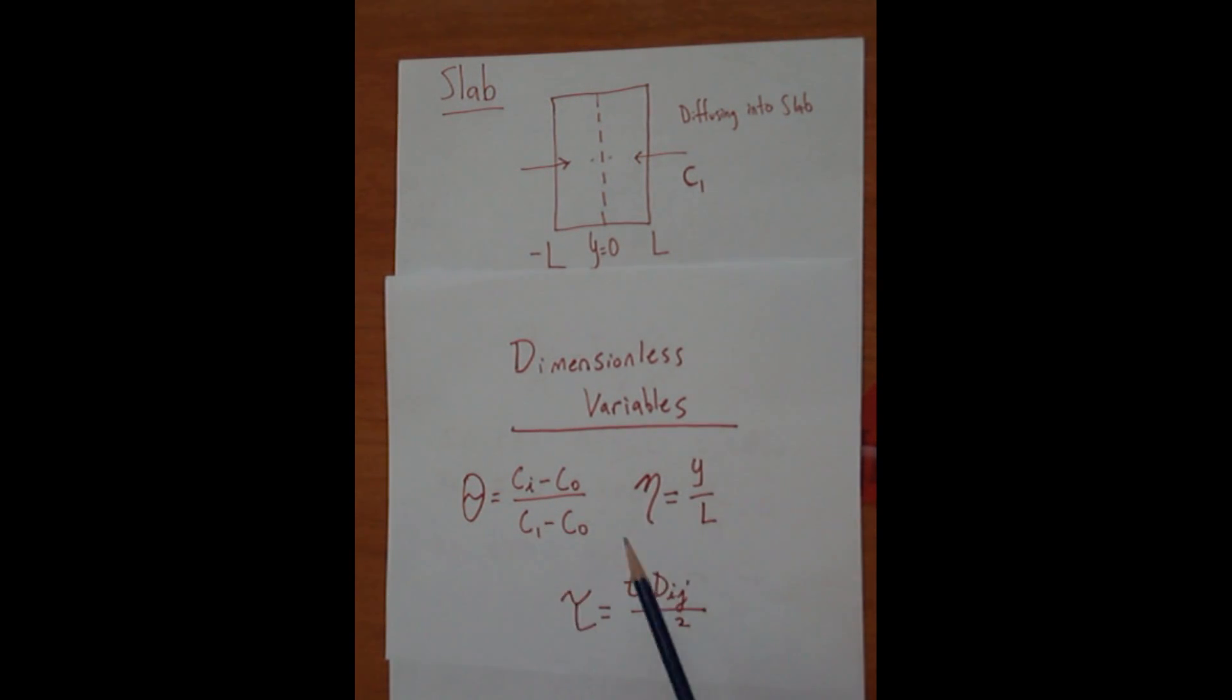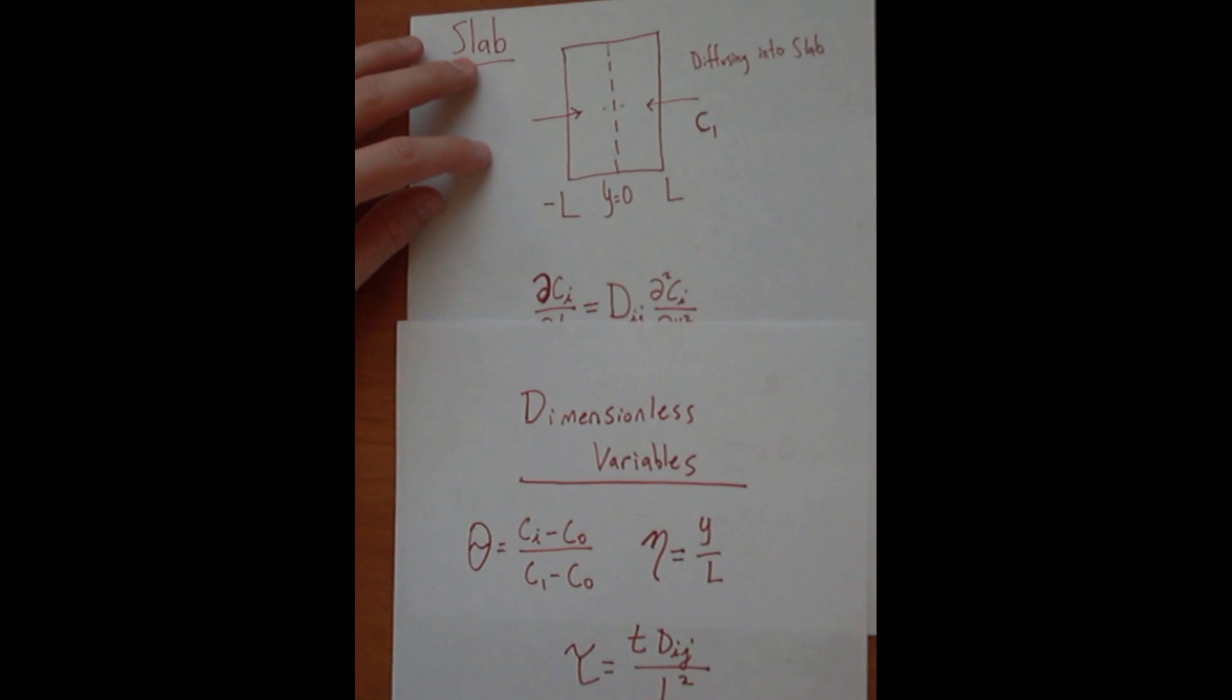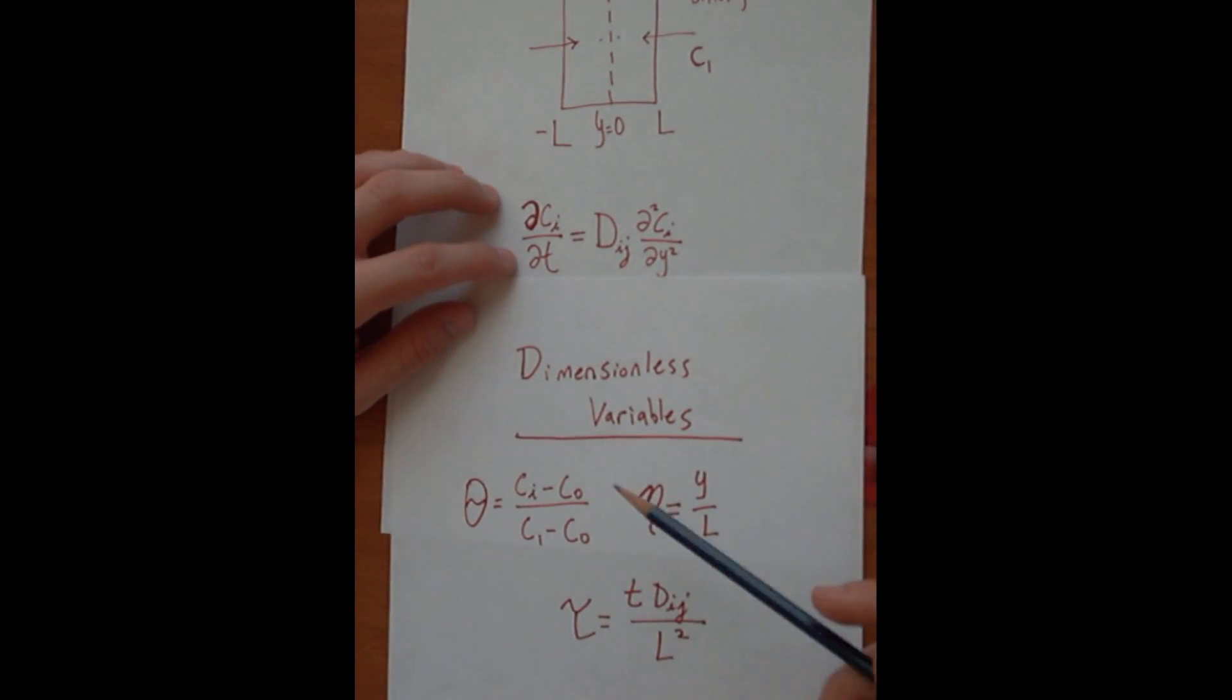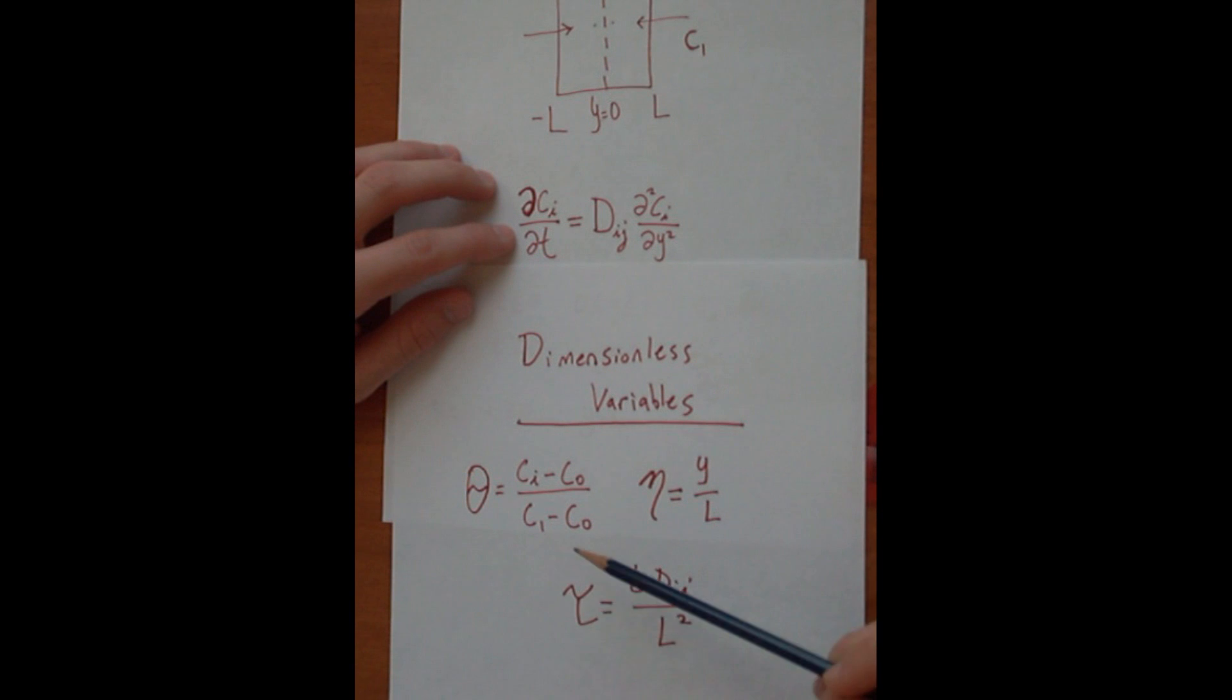So from these variables, we can take this equation, the governing equation, use these variables, rearrange the terms Ci and be able to plug in T into this.